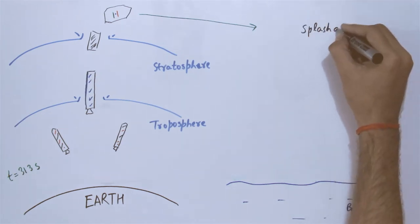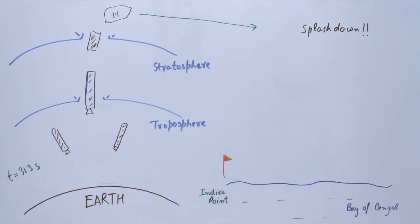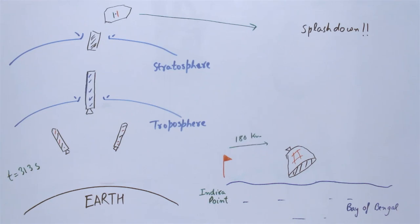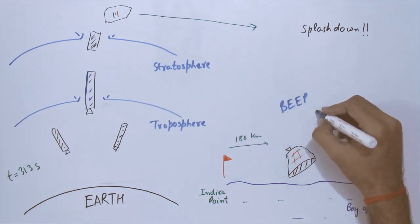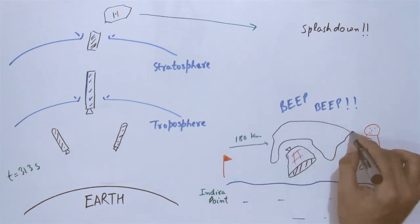The module splashes down into the ocean some 180 kilometers from the Indira point of the Andaman and Nicobar Islands, upon which the main parachutes are immediately detached from the crew module and a beacon giving its position activated. The module is eventually collected by the Indian Coast Guard, which marks the end of the process.